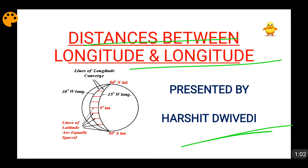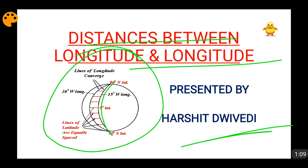A figure is shown here. In this figure, you can see that two longitudes are shown. Looking at these longitudes, you can understand that the distance between them is highest at the equator. As these longitudes go towards the poles, the distance between them decreases, and when they reach either the North Pole or the South Pole, the distance between both longitudes becomes zero. So the distance variation between two latitudes will not be that great, but for longitudes the distance is highest at the equator and becomes zero at the poles.